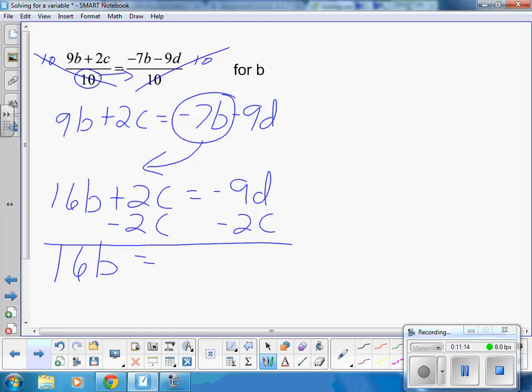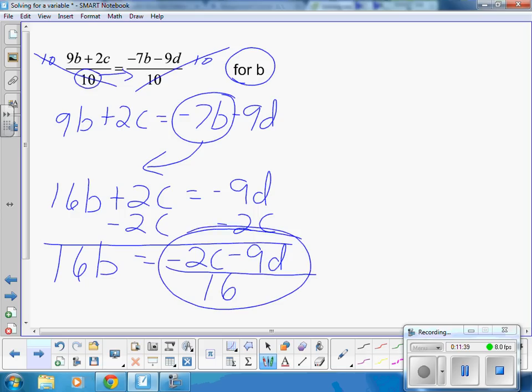So it leaves me with 16B equals minus 2C minus 9D. I can't add or subtract a C and a D because the letters are different. Only if the letters are the same can I add or subtract them. Now, I have 16B. I want to solve for B, so I divide both sides by 16. That is your answer. Negative 2C minus 9D over 16.